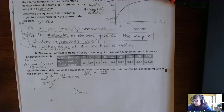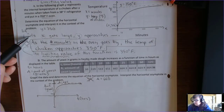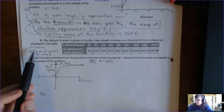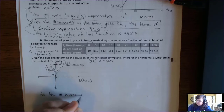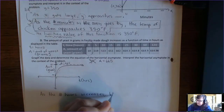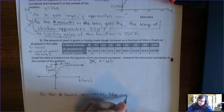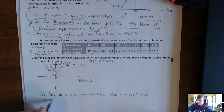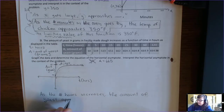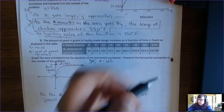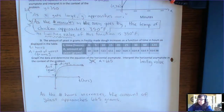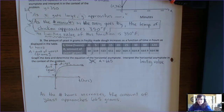Now interpret the horizontal asymptote using the template 'as x gets large, y approaches blank.' Replace with units: as the number of hours increases, the amount of yeast approaches 665 grams. We say 'approaches' rather than 'equals' to capture the idea that it's getting close but never quite reaching it. If asked for the limiting value, remember that limiting value is another word for horizontal asymptote in a word problem.